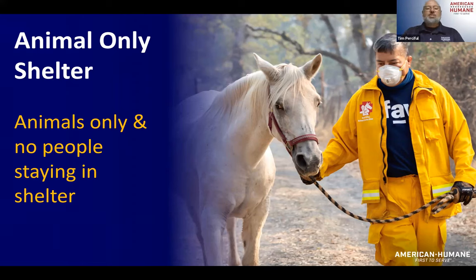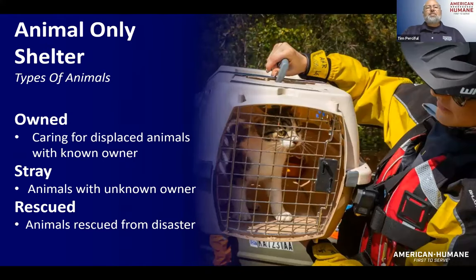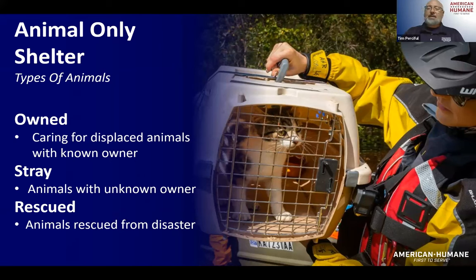This is the more traditional type of shelter. They're still used on a regular basis, and it's probably still the most common type of animal shelter during disasters. An animal-only shelter can have owned animals from people displaced by the disaster, stray animals people bring in, and rescued animals from official rescue groups.